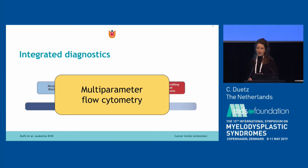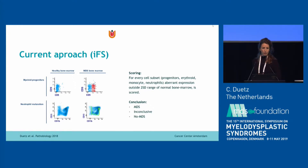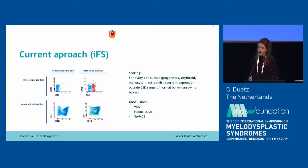In our lab we use the integrated flow cytometry score, which is a combination of the Ogada score, the Well score, and erythroid parameters identified by the IMDS workgroup. What we do is we look at abnormal expression, abnormal subset distribution, and abnormal maturation.